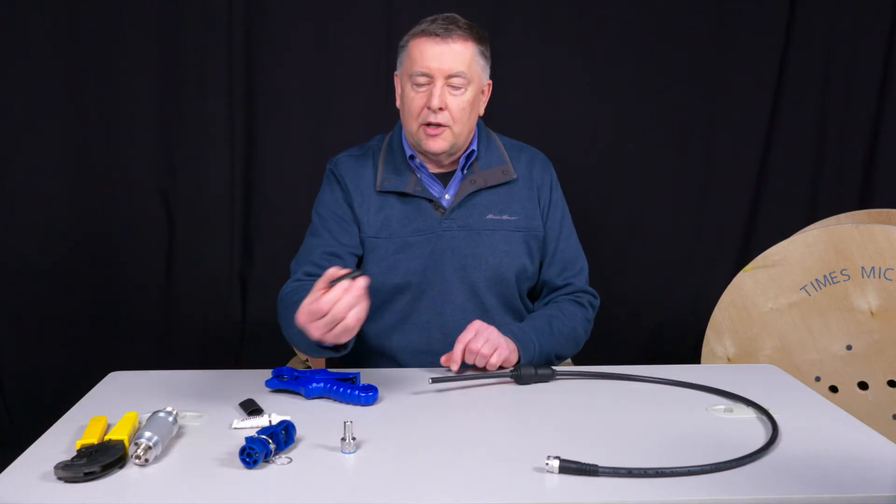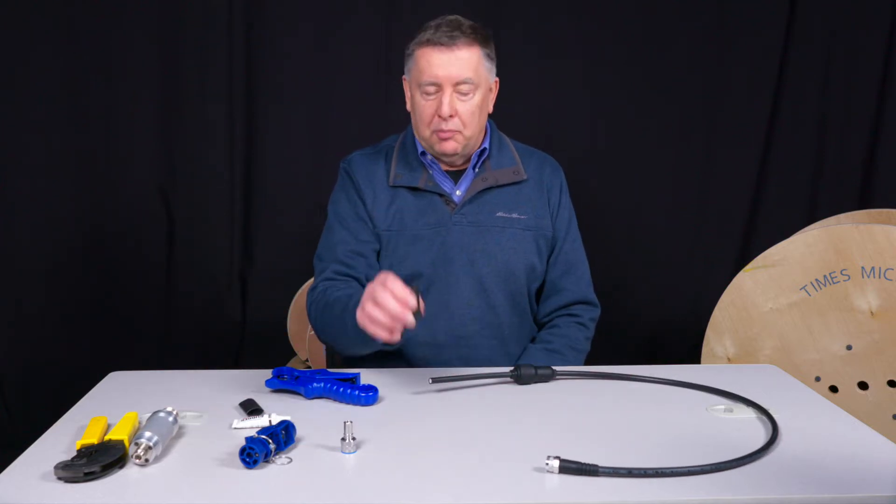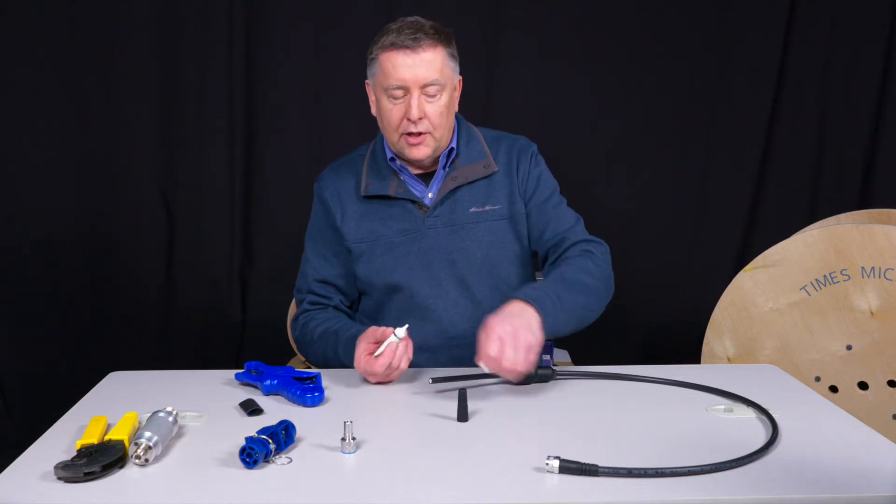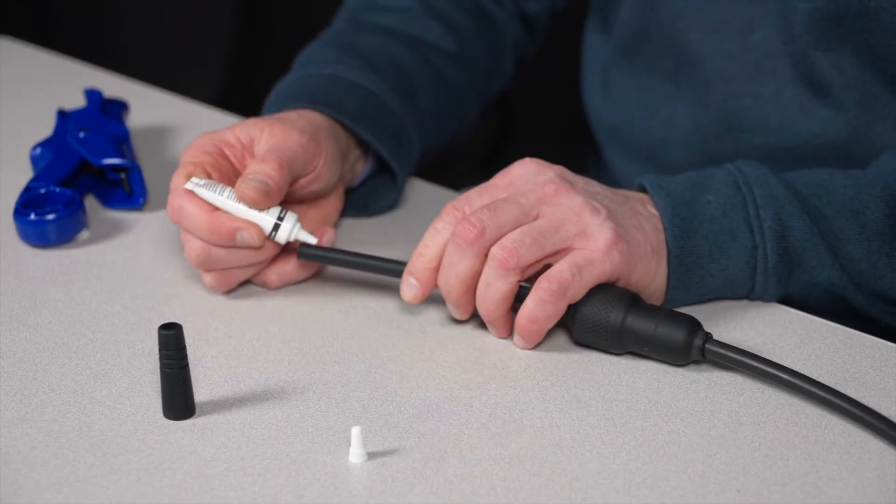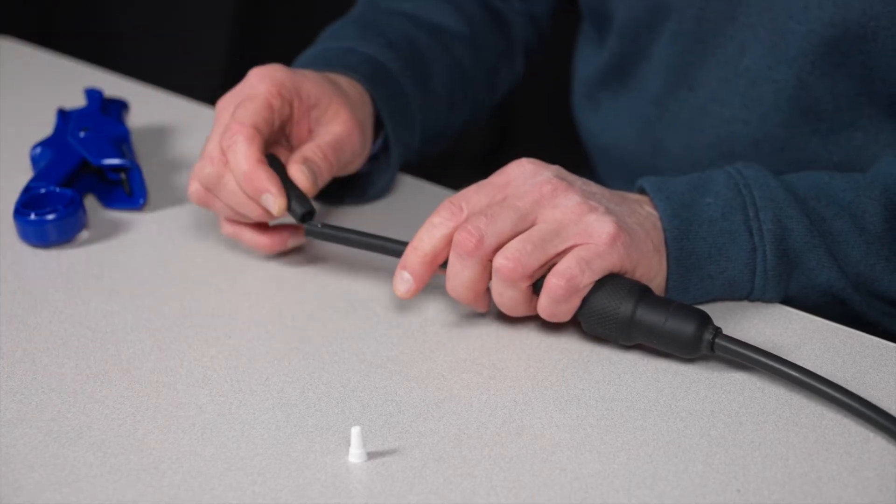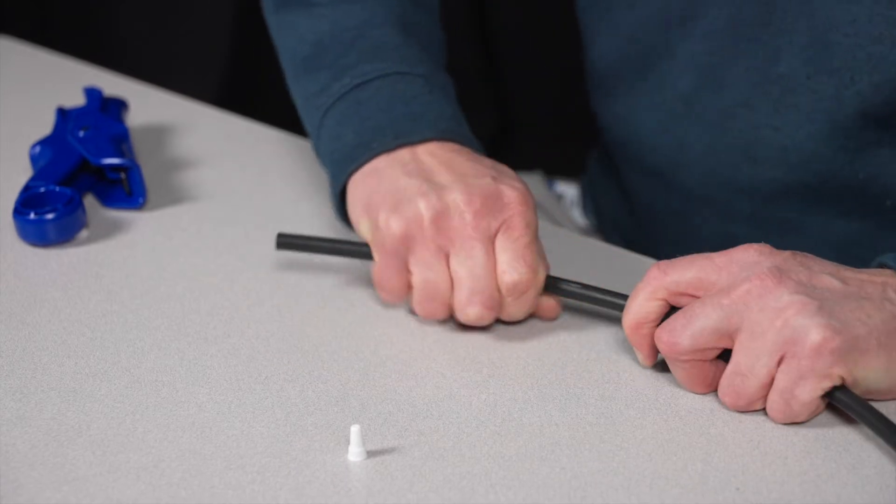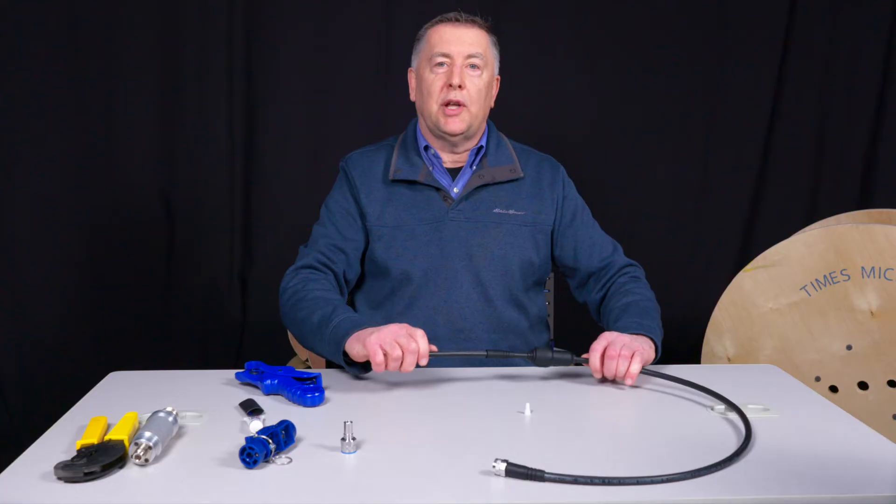At that point, you take your WSB-400 boot, and this you will need a little bit of lubricant to get it started. It's a nice, snug fit. This is what seals the back end of the connector. Let's put a drop of rubber seal there, get the boot started on the cable, and you can slide that boot back. You've got both boots on the cable.